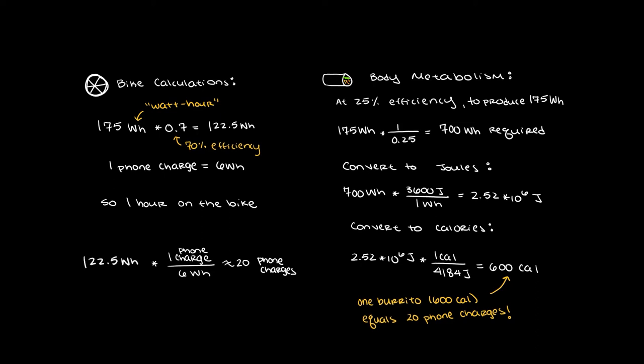So, in order to create this 175 watt hours from pedaling our bike for an hour, we can do the math. 175 watt hours times 100 divided by 25 equals 700 watt hours.